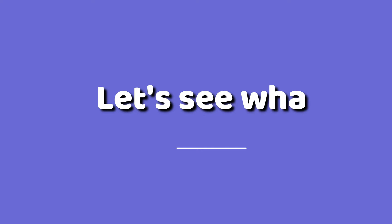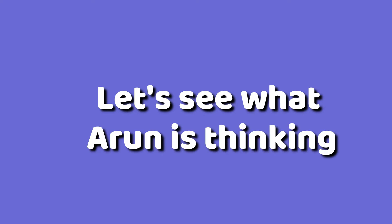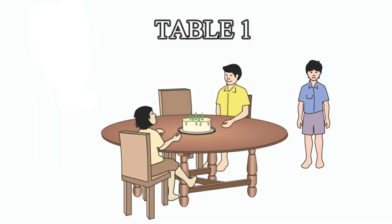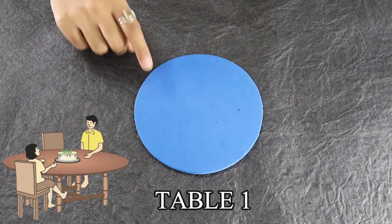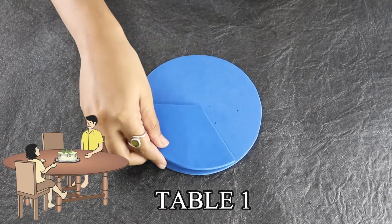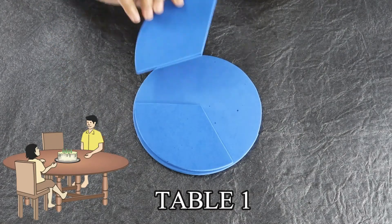Now, let us see what Arun is thinking. At table 1, there are two friends and Arun will be the third one. Arun thinks that the cake will be divided into three parts if he goes to table 1.